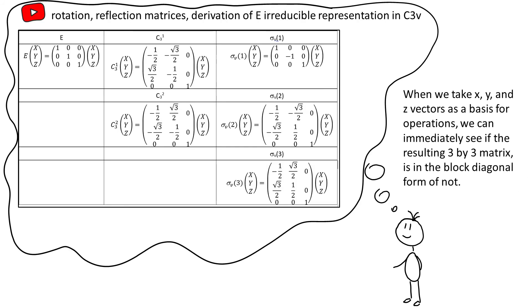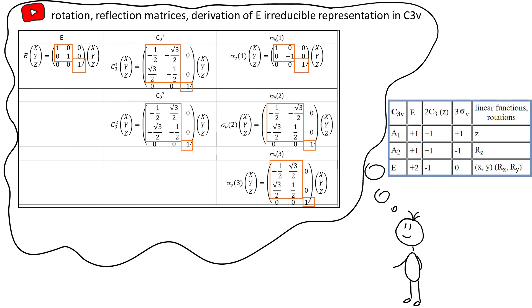In this particular case, they are made by 2x2 and 1x1 blocks. And therefore, they describe two-dimensional representation E and one-dimensional representation which happens to be A1 for C3Z group.